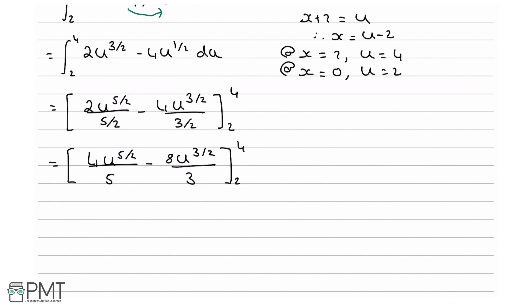Now what we are going to do is substitute our limits into our results. So we are going to put 4 in for u. So this equals 4 times 4 to the 5 over 2 over 5, minus 8 times 4 to the 3 over 2 divided by 3. So that's the first part.